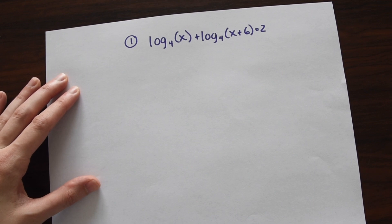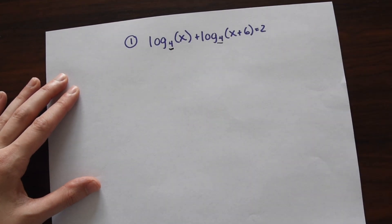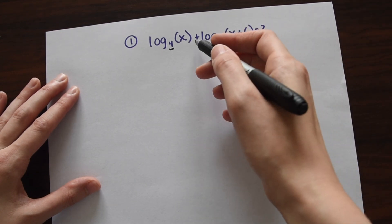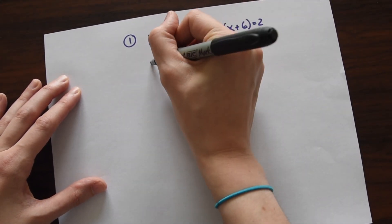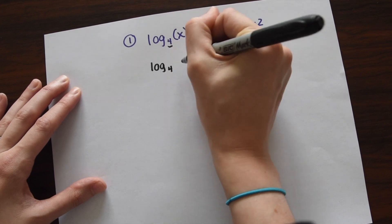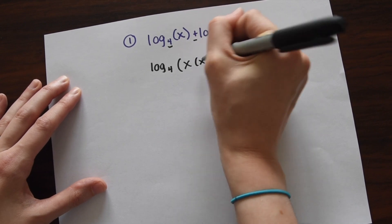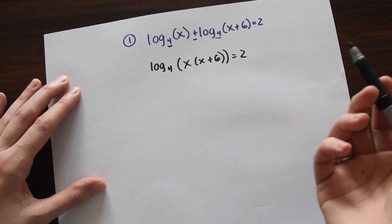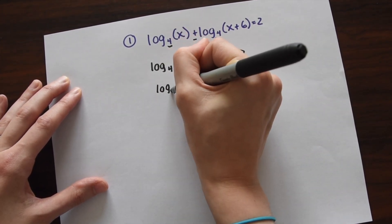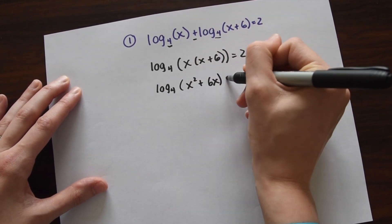Right away we want to look if this matches any of our properties — is there any way we could simplify this? We're adding, we have the same base — log base four and log base four — so we can definitely use the product rule. To rewrite this using the product rule, we write log base four of x times x plus six equals two. Simplifying: log base four of x squared plus six x equals two.